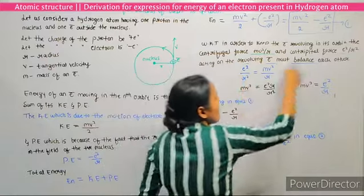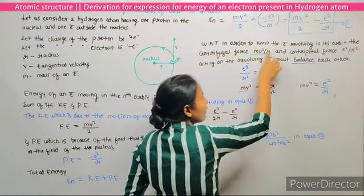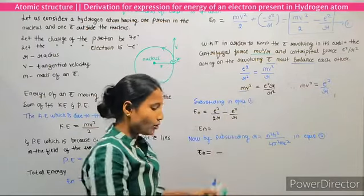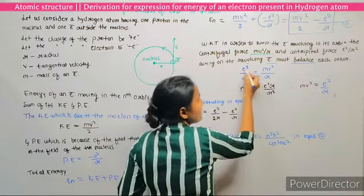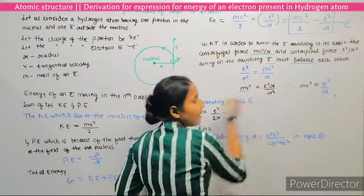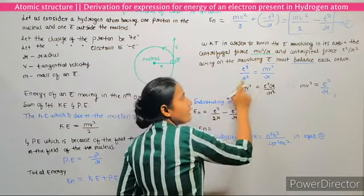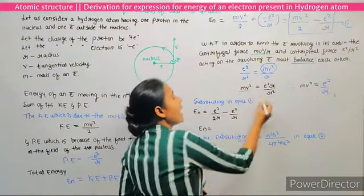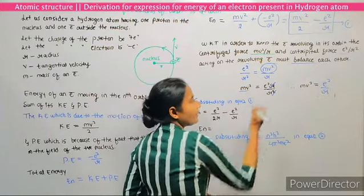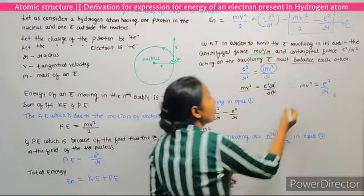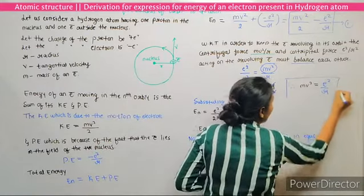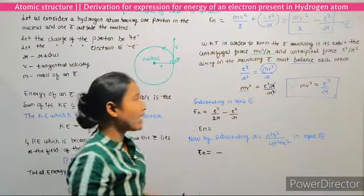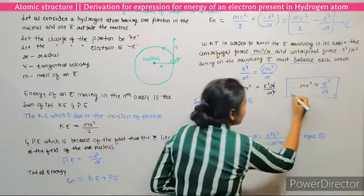From the force balance equation e²/r² = mv²/r, we get mv² = e²·r/r², and the r in the numerator and one r in the denominator cancel, giving mv² = e²/r.